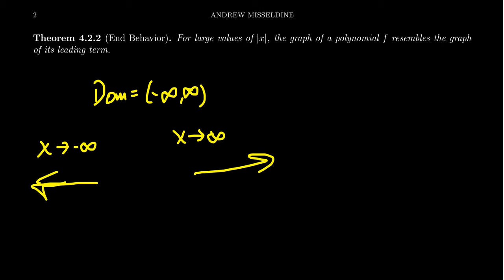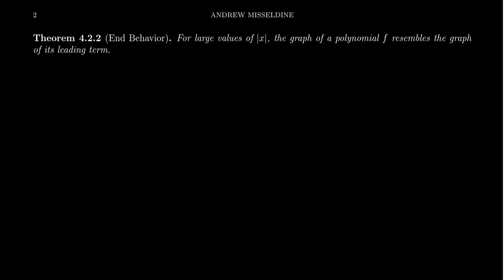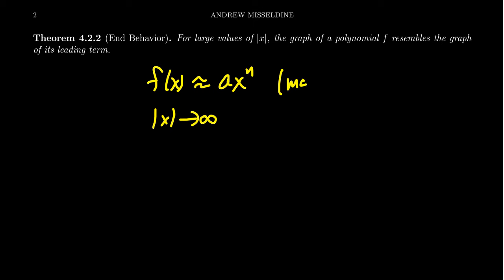For a polynomial function, it turns out that for large values of x — and here I'm talking about the absolute value of x, so whether we go to the far right or far left, direction doesn't matter — a polynomial graph will resemble its leading term, which is just a monomial. So as the absolute value of x approaches infinity, our polynomial will be approximately the same as its leading term, a·xⁿ. The end behavior of a polynomial will just resemble the end behavior of that monomial, as we saw when we studied monomials in the previous lecture.